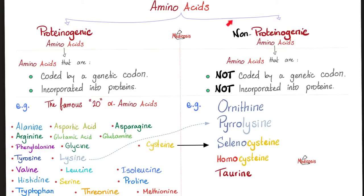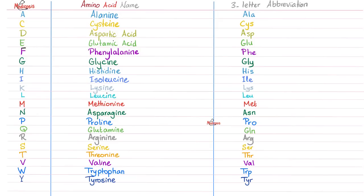How many amino acids are there? Many. But how many proteogenic amino acids exist in the human body? Only 20. Today we are focused on phenylalanine and tyrosine. Each of these amino acids has a name, a one-letter abbreviation, and a three-letter abbreviation. Here is phenylalanine and here is tyrosine.